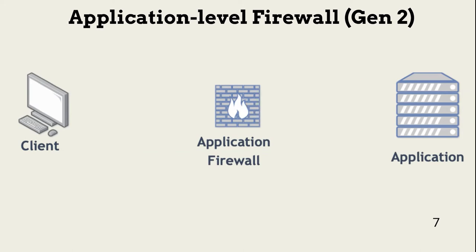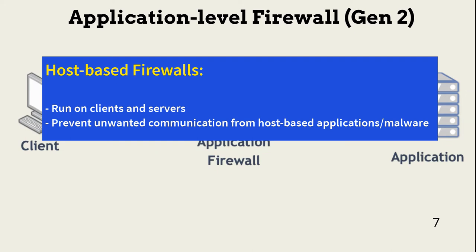Network-based application firewalls, or gateways, operate at the application layer. They usually understand application layer protocols like FTP, DNS, and HTTP, enabling security teams to create firewall rules that can block protocol abuse and data extrusion. They can also offload session encryption from the servers they protect. Another type is host-based application firewalls, which run on endpoints instead of on network firewall appliances, protecting the host from establishing sessions not explicitly approved.